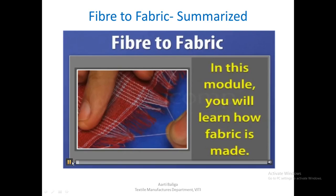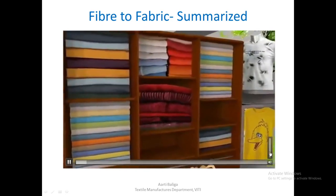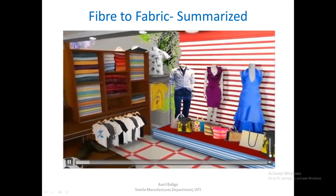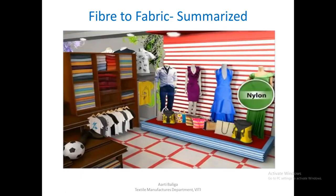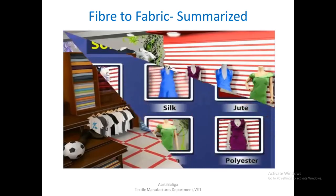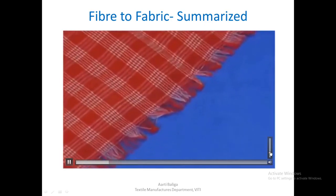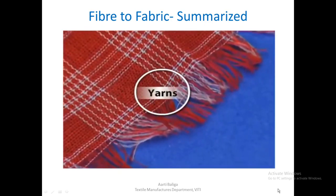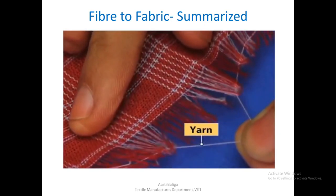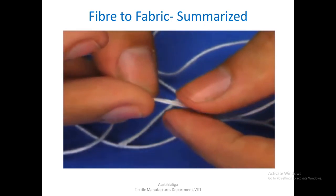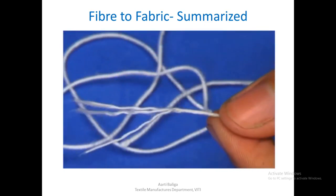In the fiber-to-fabric module, we learn how fabric is made. We wear different types of dresses; each is made of some fabric. Cotton, silk, jute, wool, nylon, and polyester are some common fabrics. Fabric is made of fine threads called yarns. You can pull out a yarn from fabric, and if you untwist it, you will find it consists of a number of thin hair-like strands called fibers.